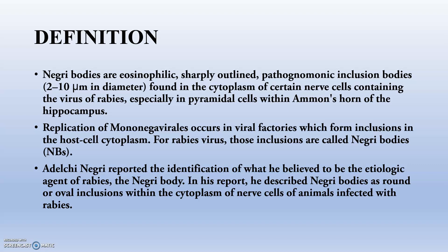Especially the pyramidal cells of Ammon's horn of the hippocampus will mainly be showing the Negri bodies. These Rhabdoviridae belong to the order Mononegavirales. Whenever they are replicating, they will be producing many ribonucleoproteins. These ribonucleoproteins fuse with some other proteins of the nerve cell, and then they become Negri bodies.